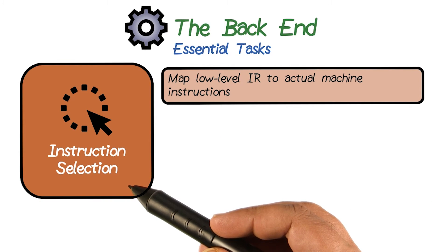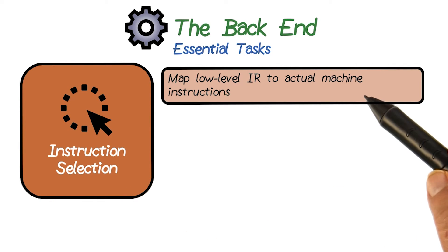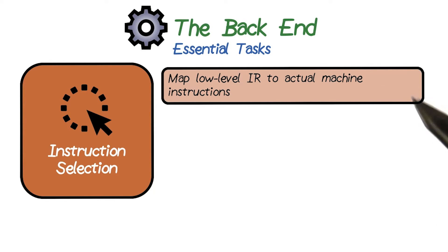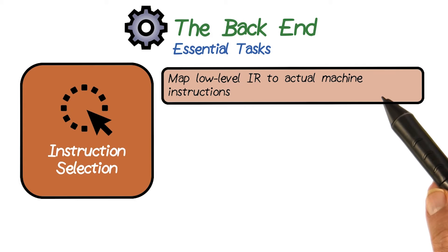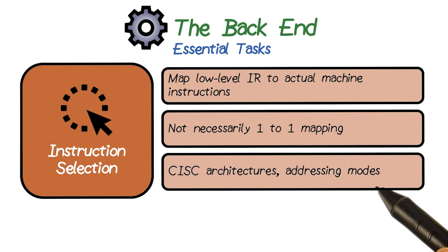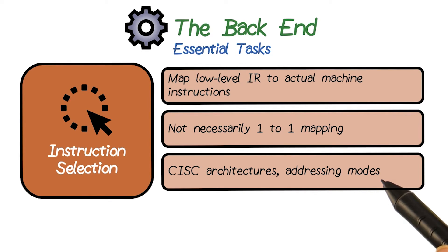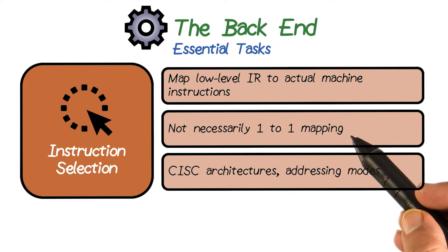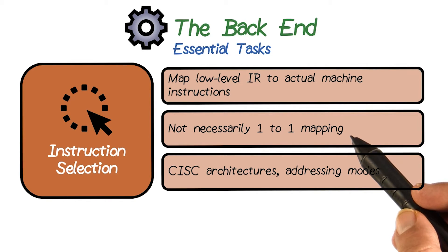Let's take a deep dive into what these phases really mean. Instruction selection is a phase which maps the low-level IR into actual machine instructions by selecting the instructions for implementing each of the IR operations. This is not necessarily a one-to-one mapping. We have differences in architecture, such as CISC, which could have a lot of addressing modes, so multiple IR operations could be represented by a single instruction. On the other hand, in RISC, each IR operation could be implemented by multiple simple instructions.